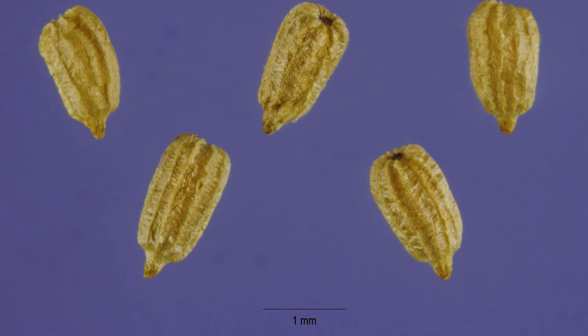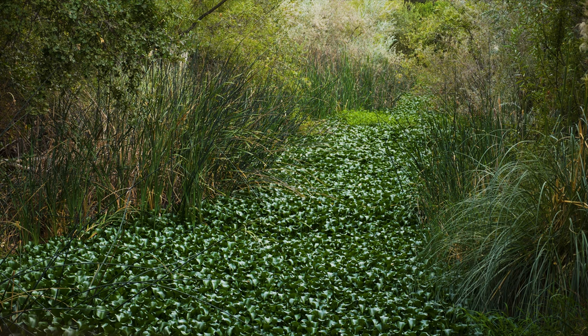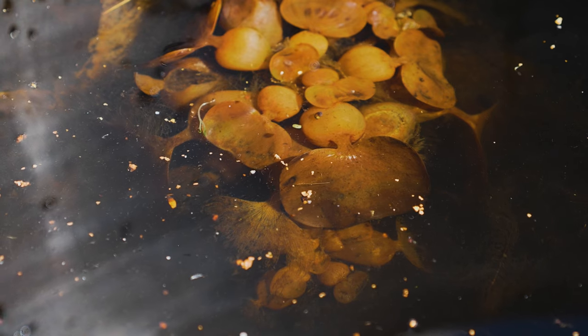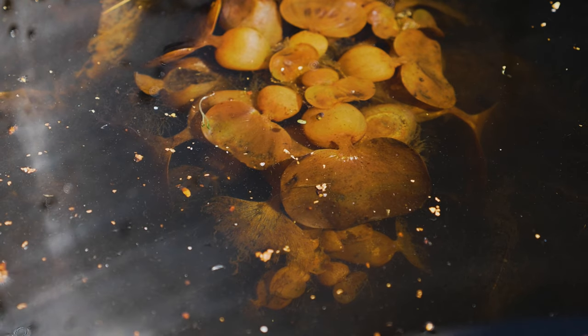Fruits are 3-celled capsules that contain up to 50 small ribbed seeds. At maturity, flowering stalks bend and release seeds below the water surface. Seeds may remain viable for 15 to 20 years. At somewhat cold sites, plants cease growth and stem bases overwinter, resuming growth in spring. At very cold sites, plants die completely.